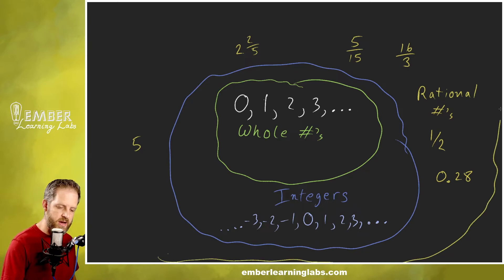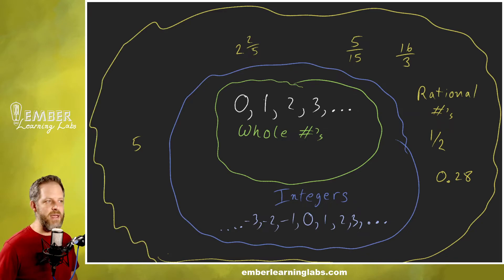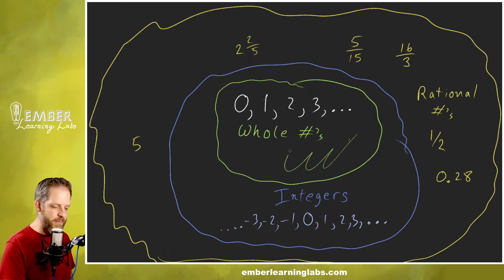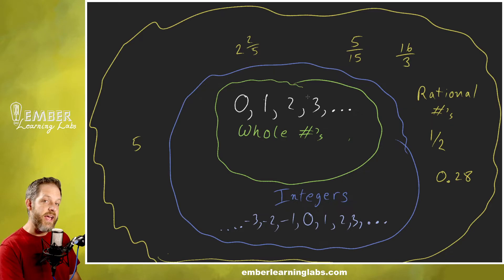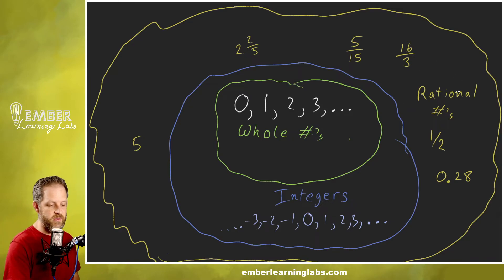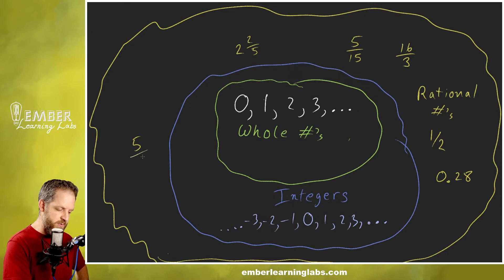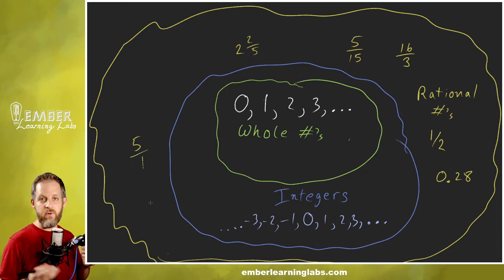The number five is also a rational number. I'm going to go ahead and add my final bubble into the amoeba. You'll notice this green blob is inside the yellow blob, which is inside the purple blob — so anything that's a whole number is also an integer, and anything that's an integer is also a rational number. But not every rational number is a whole number. Can we write five as a fraction? Yes — we just put it over one. It's a fraction now.